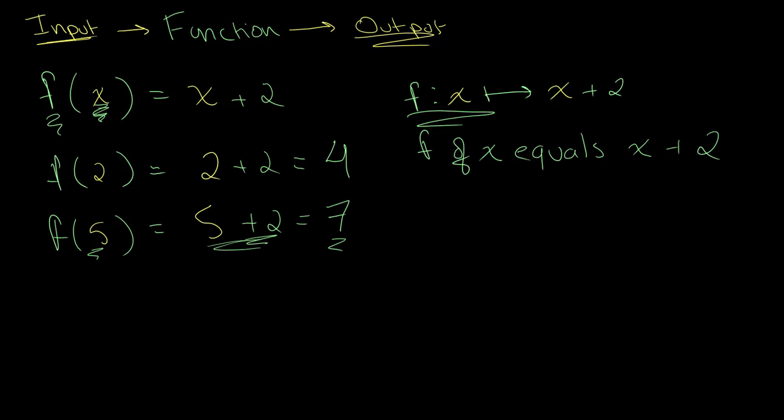One should note that functions aren't always denoted in terms of f and x. So, for example, over here, we can take the example of a function g of b is equal to b squared minus 2 over 3. So over here, b is our input. The work we are doing on b is we are squaring it, we are subtracting 2 from it, and we are then dividing the whole entire thing by 3.